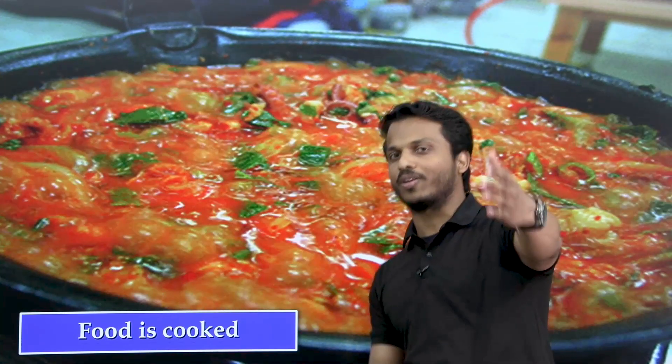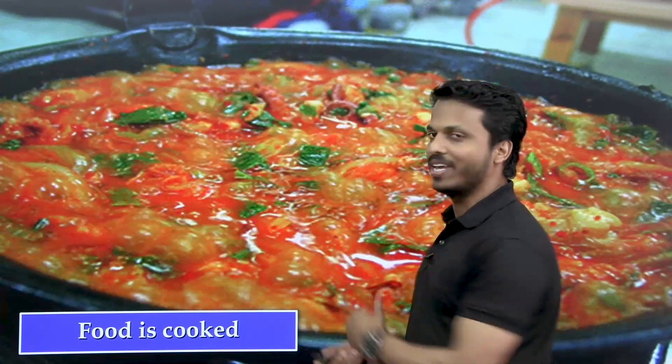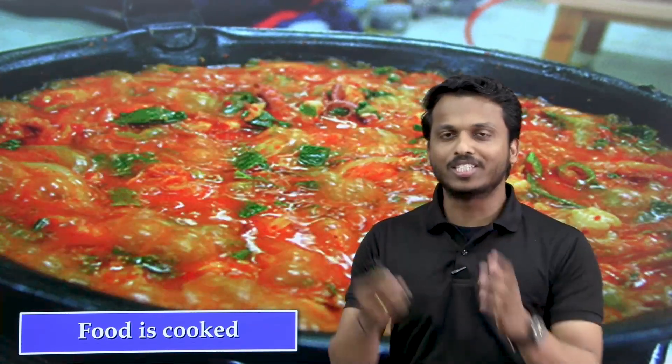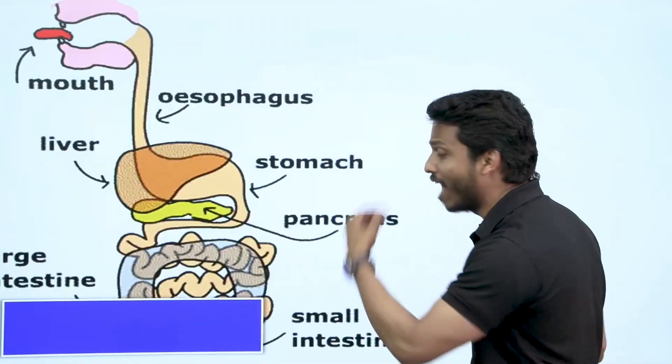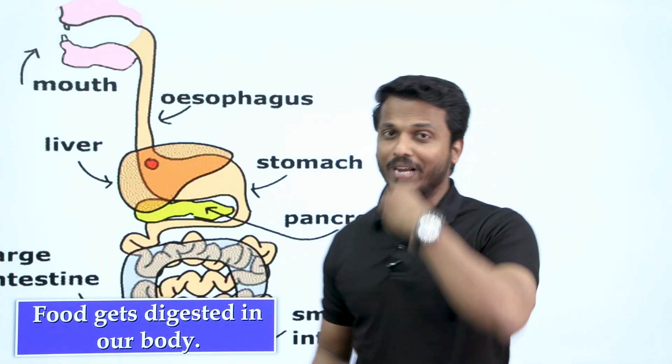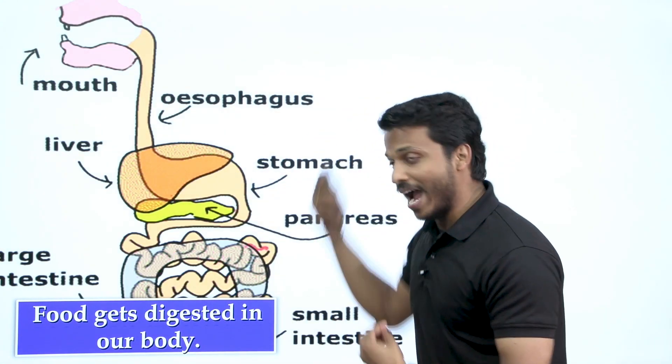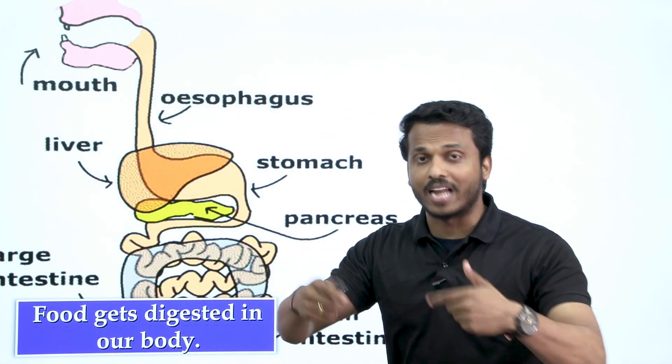Another change: grapes get fermented — fruits undergo fermentation. And here we have food being cooked in the kitchen — your mother making some food. Before cooking you have vegetables, chicken, or fish, and after cooking it is a completely different form. So that is also some change happening.